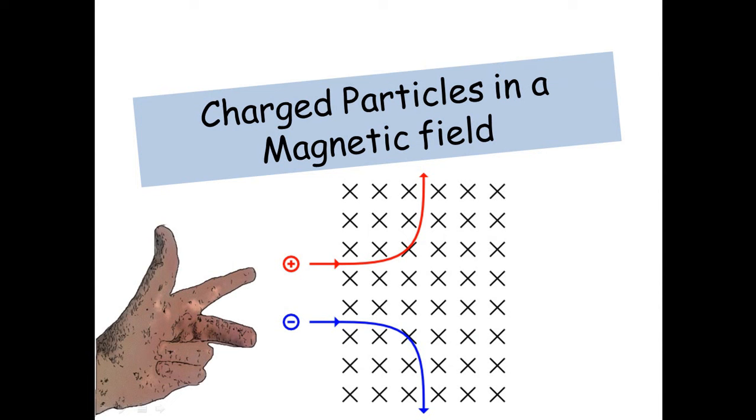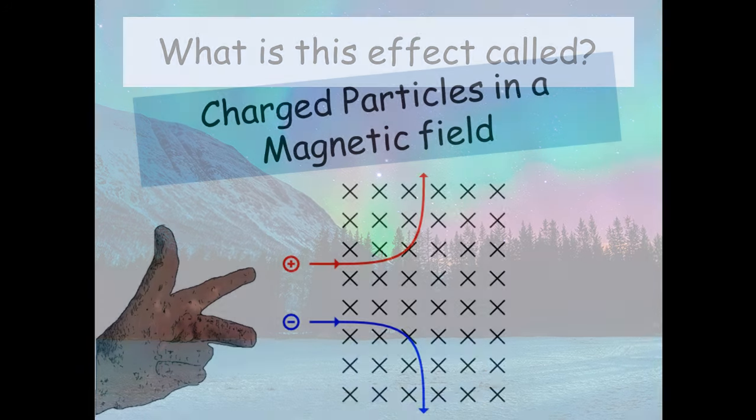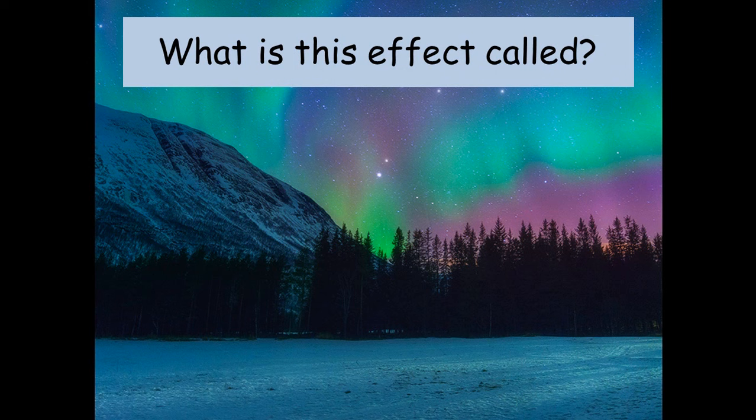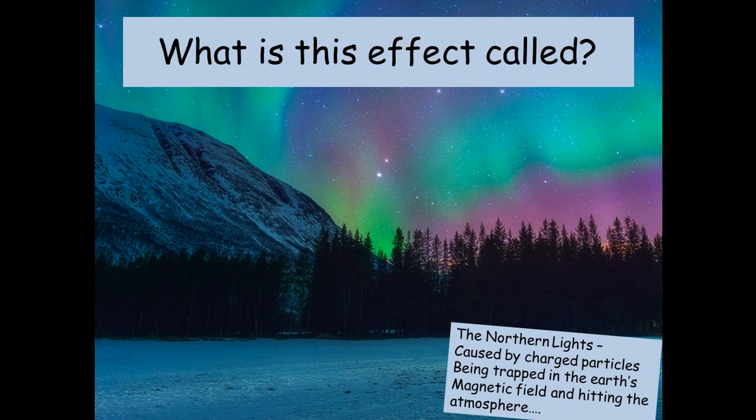Hi guys, today I want to talk about charged particles in a magnetic field. Firstly, look at this nice picture. What is this effect called? Well, it's called the Northern Lights. Actually, the Northern Lights is caused by charged particles being trapped in the Earth's magnetic field and hitting into the atmosphere.